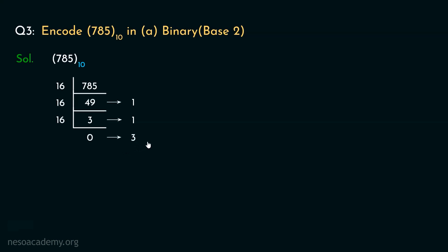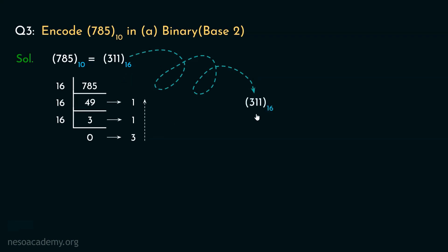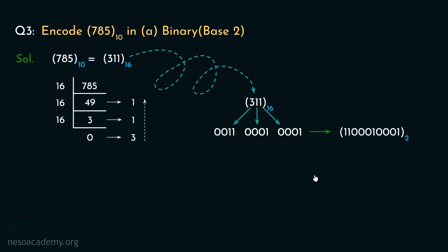Now all we have to do is enlist the remainders in reverse order. So we end up getting 311 in hexadecimal. Now what we will do is take this hexadecimal value and thereafter convert all the different digits into 4-bit binary. So 1 is actually going to be 0001, then this one will also be 0001. Coming to 3, the binary for 3 is 0011. Now if we omit the prefix zeros, we will end up acquiring the binary value of 785, that is 1100010001. So this is the binary value of the decimal number 785.